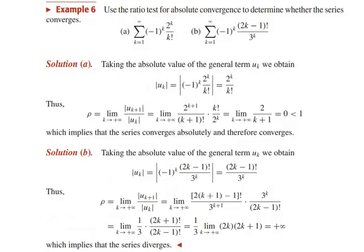Now we apply the ratio test for absolute convergence. The question asks us to determine whether the series converges. Subdivision (a) is sigma k=1 to infinity of (−1)^k · 2^k / k!. We take the absolute value of the general term u_k: |u_k| = |(−1)^k · 2^k / k!| = 2^k / k!.